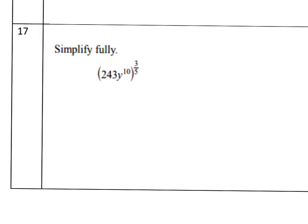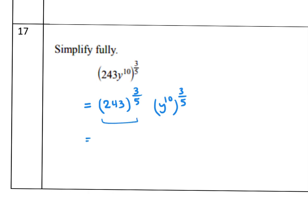Problem 17: simplify (243 · y^10)^(3/5). Distribute the power. 243^(3/5) — using a calculator — equals 27. Then multiply 10 times 3/5 = 6, giving y^6. The final answer is 27y^6.